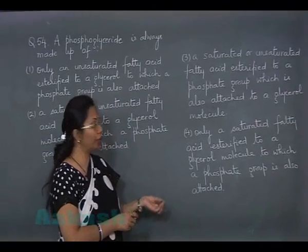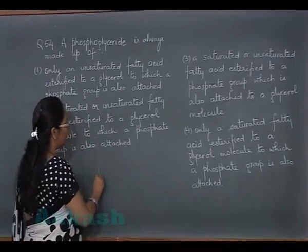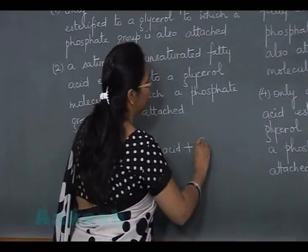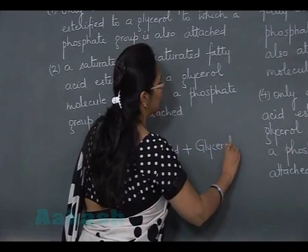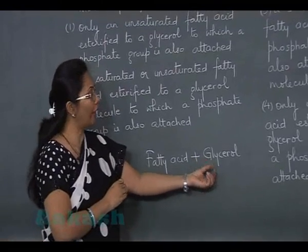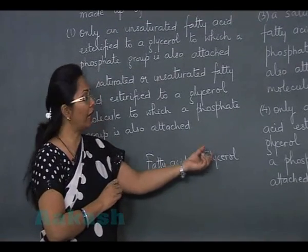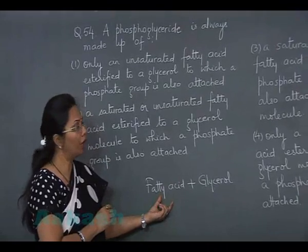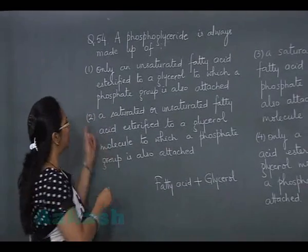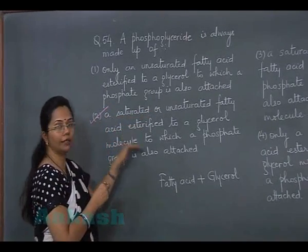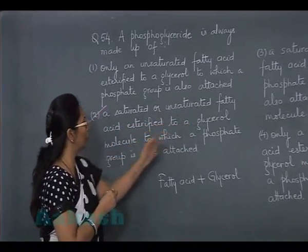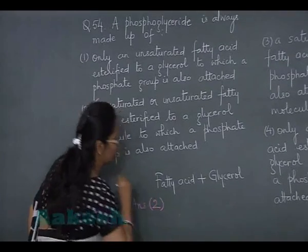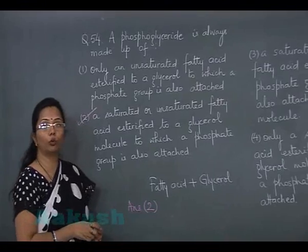In a phosphoglyceride, the term 'glyceride' means there is a fatty acid, and fatty acid always esterifies with an alcohol. The alcohol in this case is glycerol, so the fatty acid esterifies with glycerol, and then a phosphate group is also attached to the glycerol. This fatty acid can be saturated or unsaturated. Only option 2 describes this correctly, so the answer is option 2.